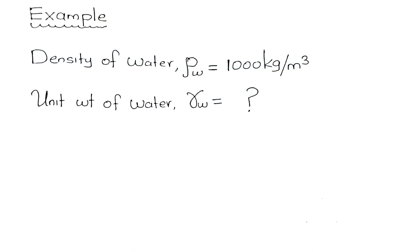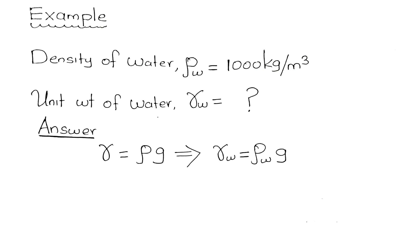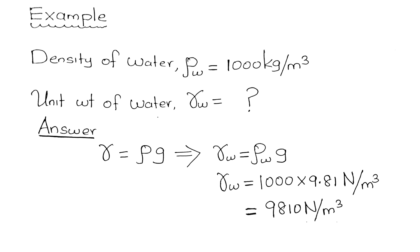Example: density of water ρ_w equals 1000 kg/m³. What is the unit weight of water γ_w? Using the relationship γ equals ρg, we get γ_w equals 1000 times 9.81. Since the input is in SI units, the output is also SI: γ_w equals 9810 N/m³, or 9.81 kN/m³.